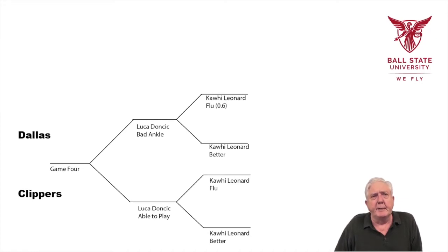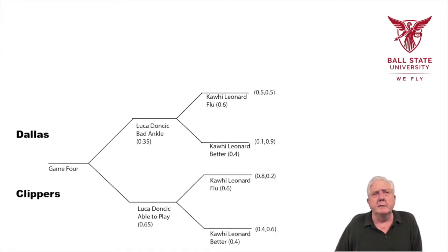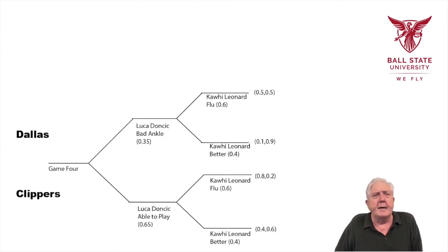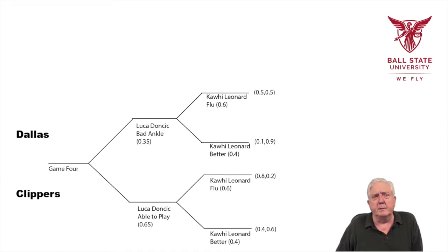I've assigned some percentages to the likelihood of these things happening. I've put in 0.6 as the probability of Kawhi Leonard having the flu, which means 0.4 that he will be better — and those 0.6 and 0.4 values apply to both branches. There's also the likelihood that Luka Doncic won't play because of his bad ankle: about 0.35 that he won't play, and 0.65 that he will play.